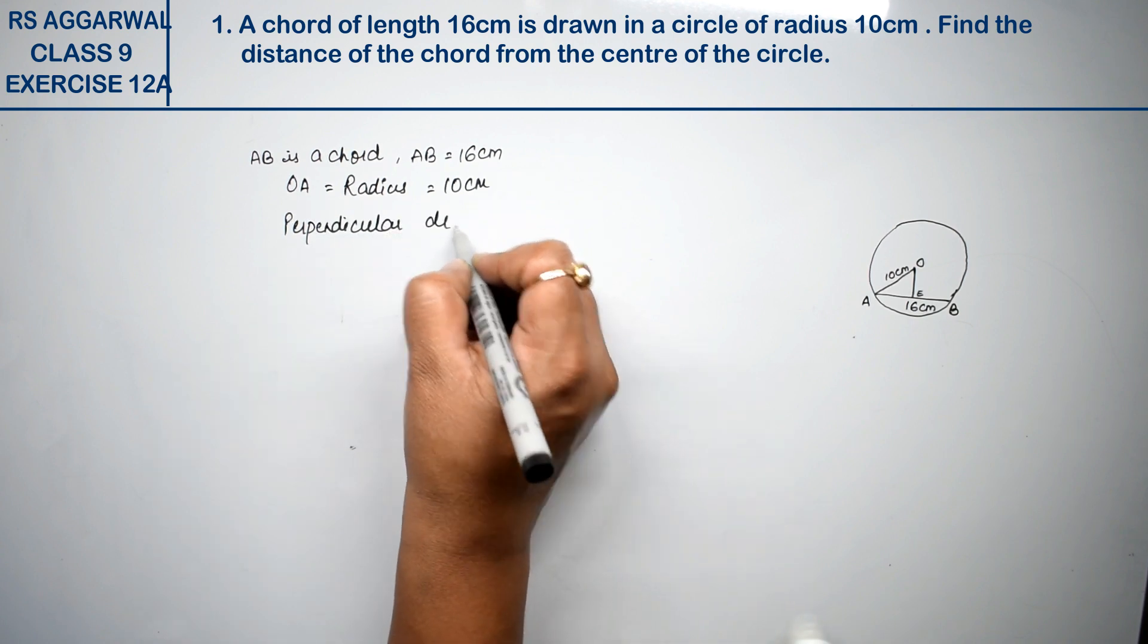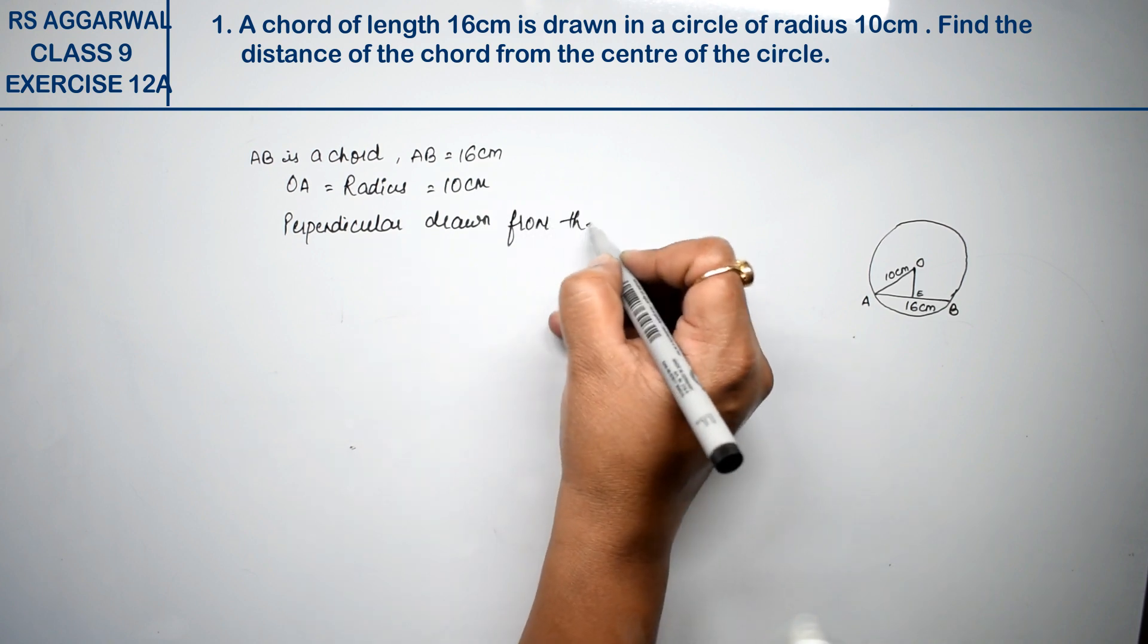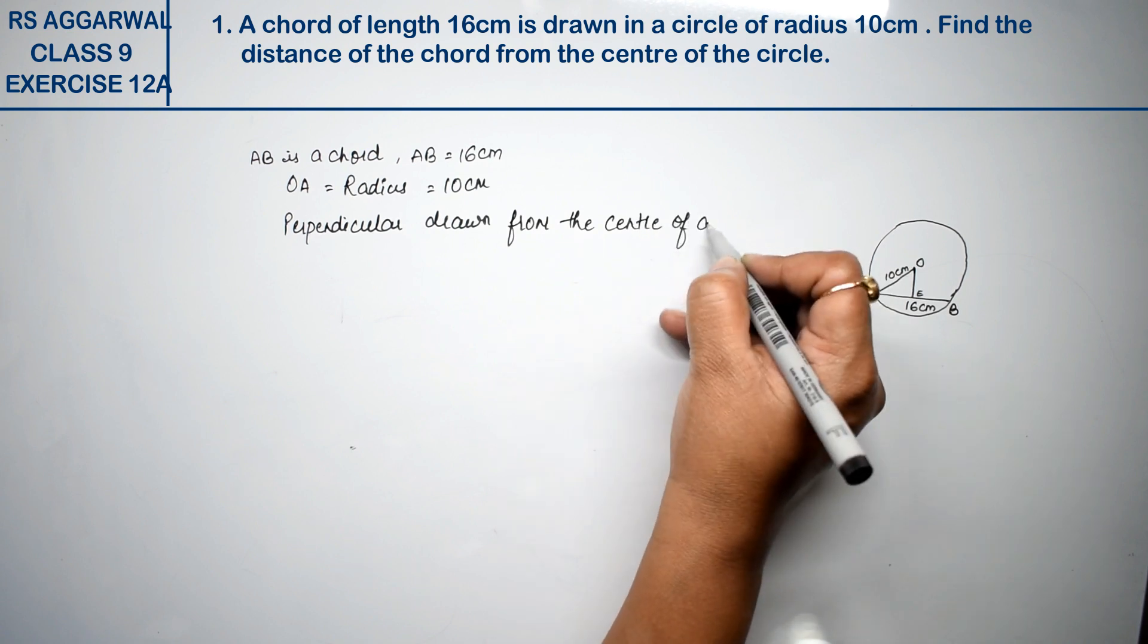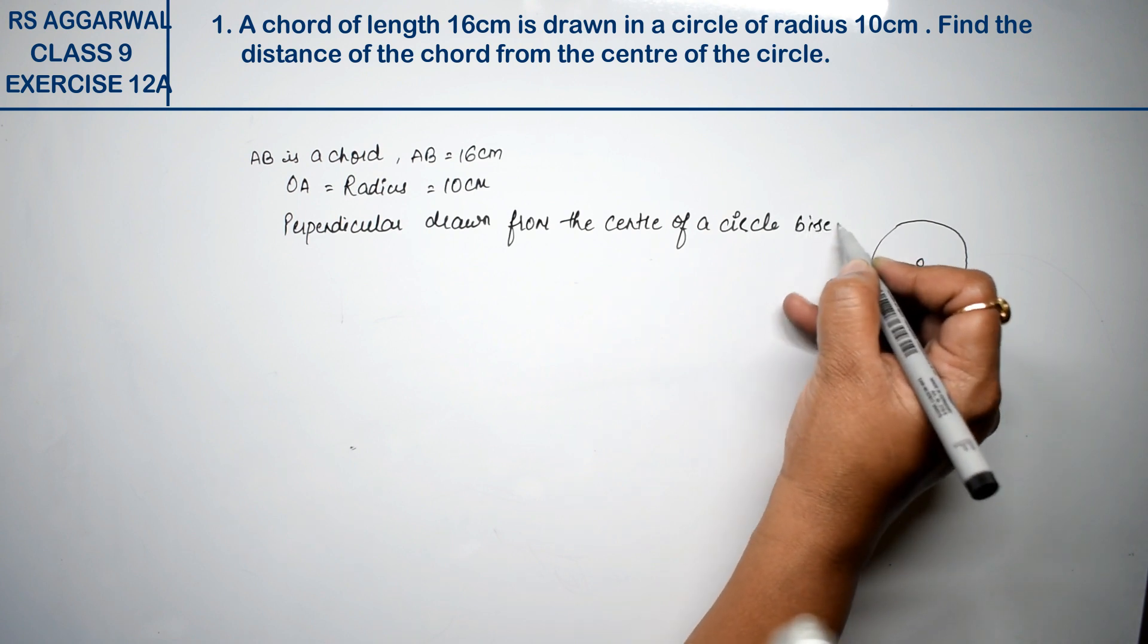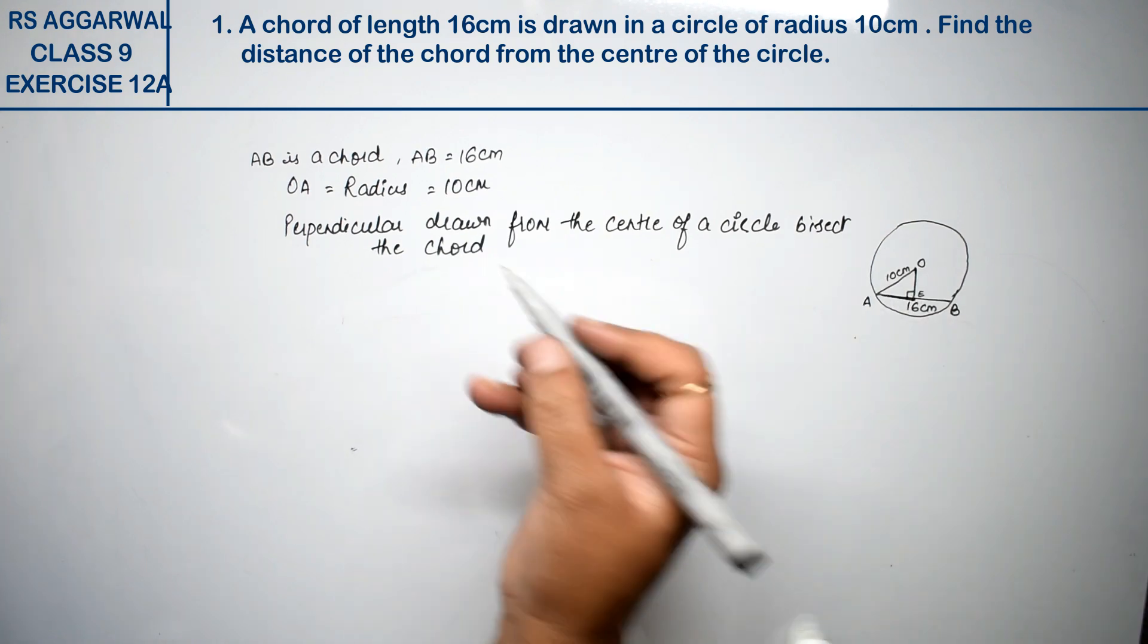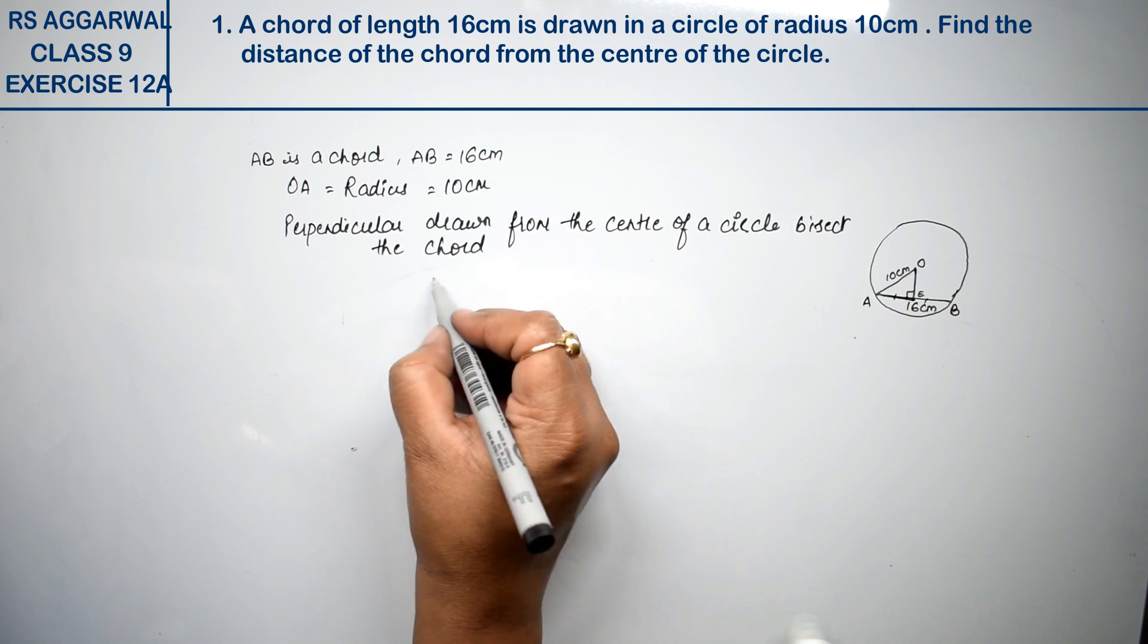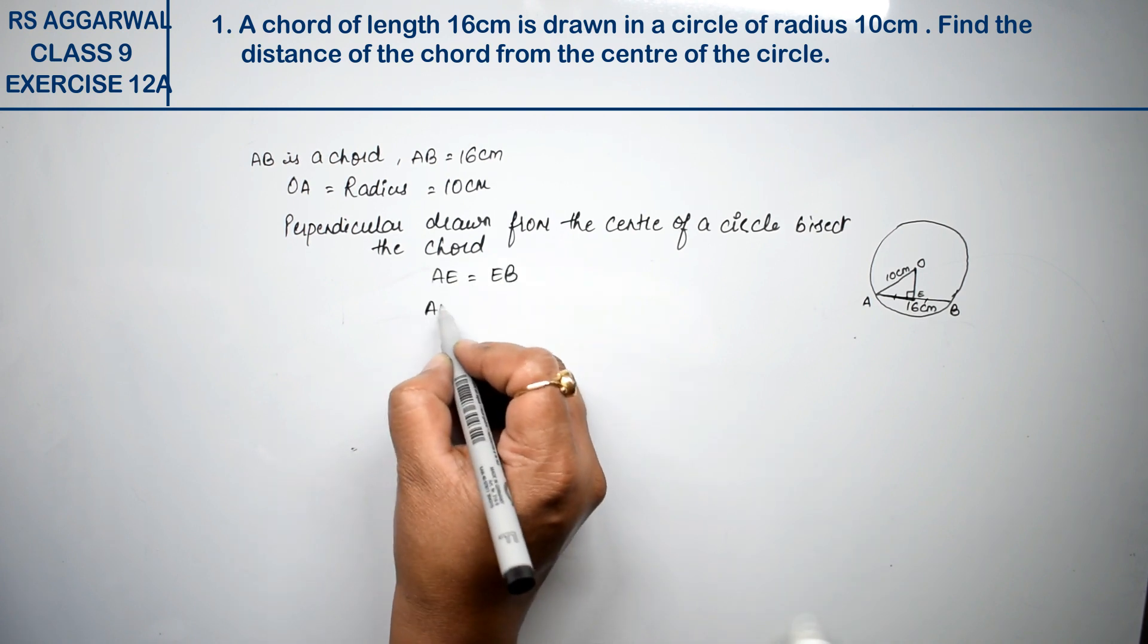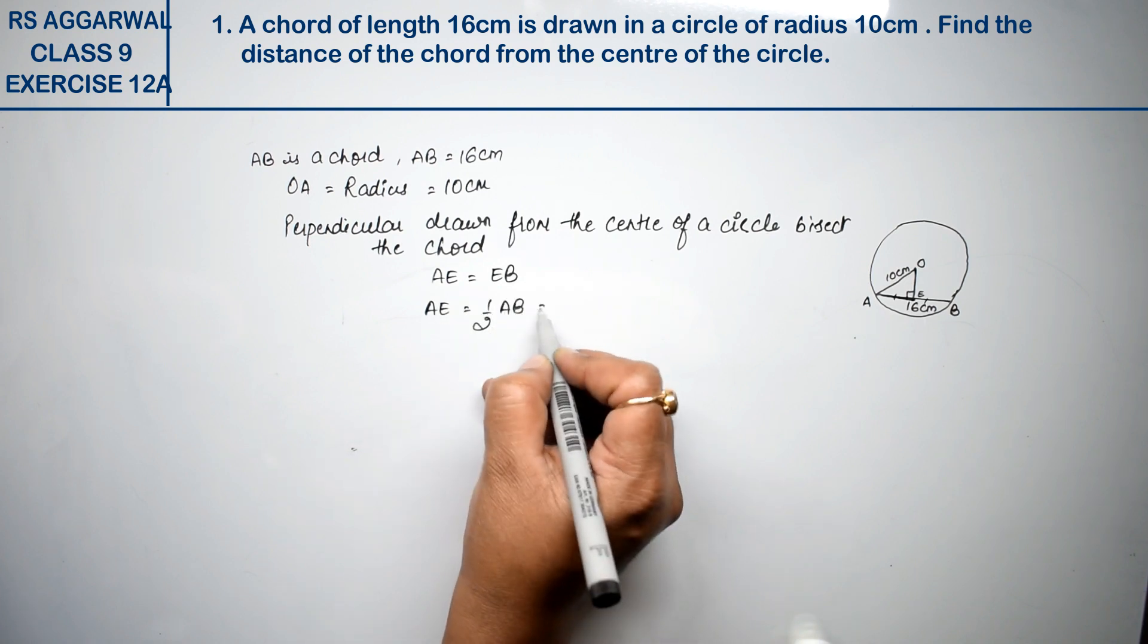Perpendicular drawn from the center of a circle bisects the chord. This equals to this, so we can say AE equals to EB. Now AE is half of AB.